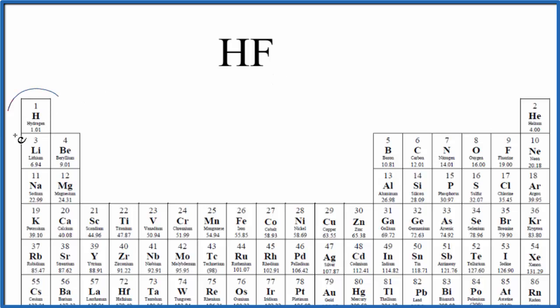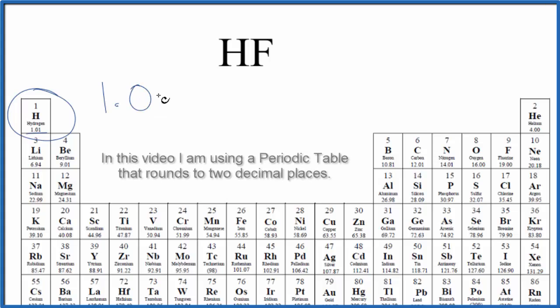So on the periodic table we look up hydrogen and we see that it has an atomic mass of 1.01 and the units for that are grams per mole, often abbreviated like this.